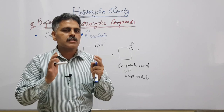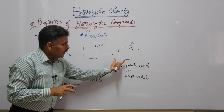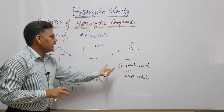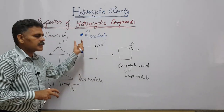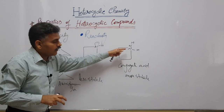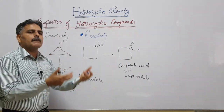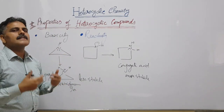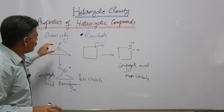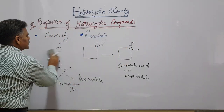Basicity of bases can be determined by knowing the stability of their conjugate acid — the more stable the conjugate acid, the more the base exists in its protonated form, and the greater its ability to accept protons. In conclusion, three-membered aziridine is less basic as compared to four-membered azetidine. Let us now extend this concept to aromatic heterocycles.